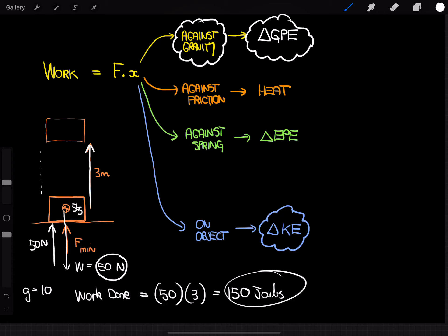What it's doing, it's actually contributing to its gravitational potential energy. And so, in this particular case, if we've done 150 joules of work on this box by lifting it, then its gravitational potential energy has increased by 150 joules.